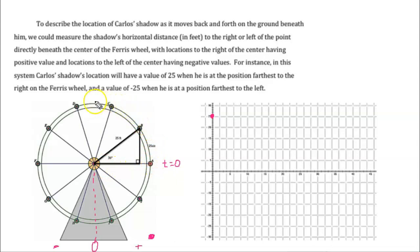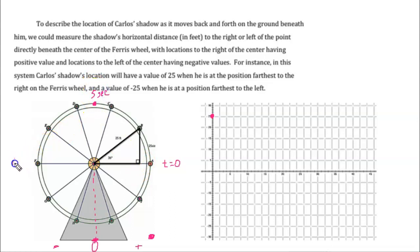Continuing around up to the top, the radius is still 25. At the top, his shadow falls right at the middle of the ground — directly under the axle — so it's at zero. We determined previously that with 20 seconds for a full rotation, one-fourth of the way around is 5 seconds. So at the 5-second mark, Carlos is at the top of the Ferris wheel and his shadow is in the middle.